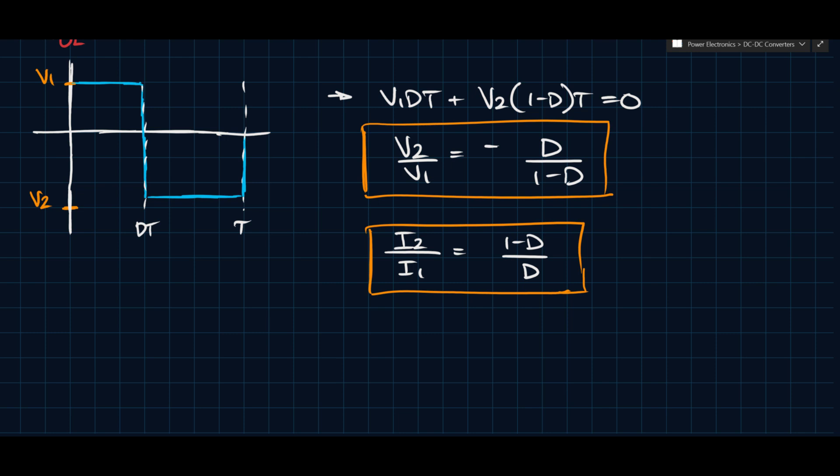But the interesting thing about this converter is that depending on the value of D, you may or may not have buck or boost operation. Well, you may have one or the other. I shouldn't say may or may not. You may have one or you may have the other. So this converter is usually referred to as a step up-down. So they either call it up-down or they call it a buck-boost. Because depending on the value of D, you might have something that's greater than 1 or something that's less than 1. And if it's greater than 1, obviously it's in boost mode. If it's less than 1, then it's buck mode. So the output can be higher or lower than the input depending on the value of the duty ratio.